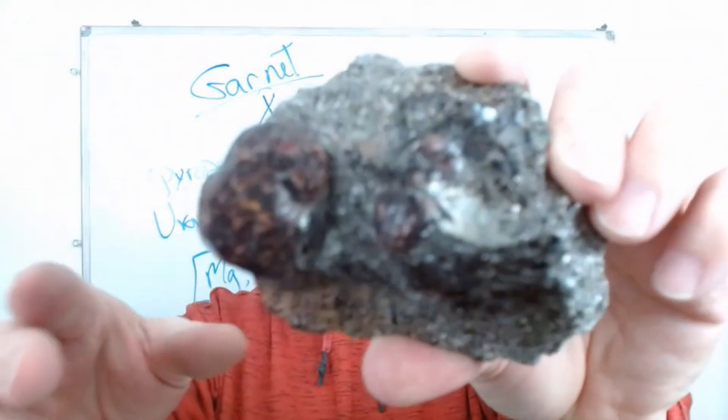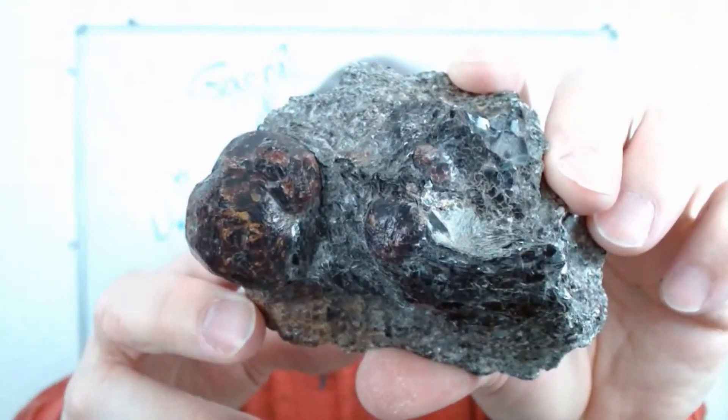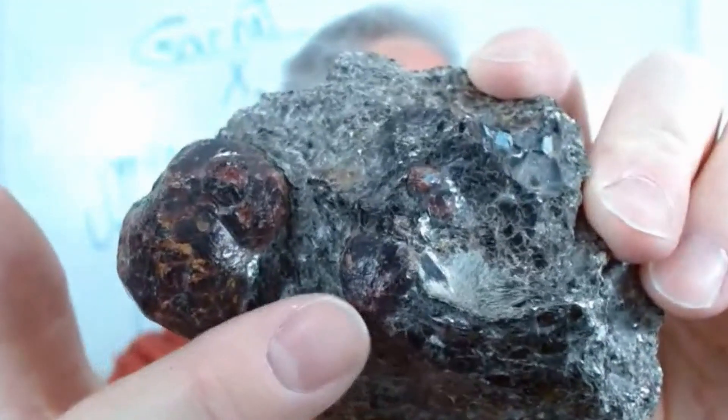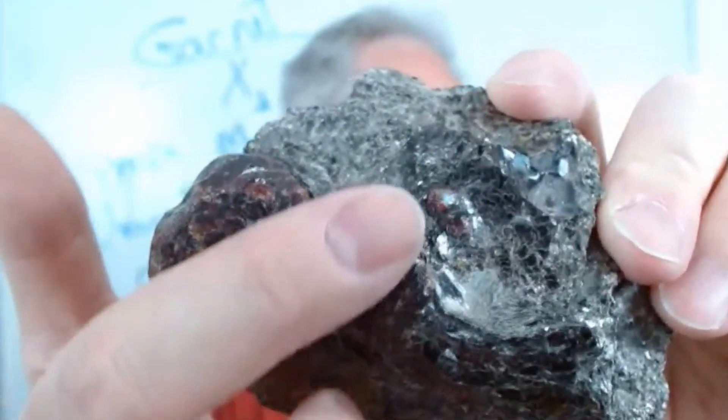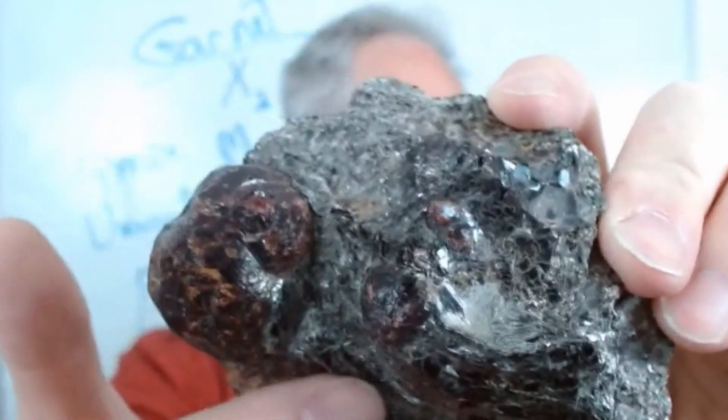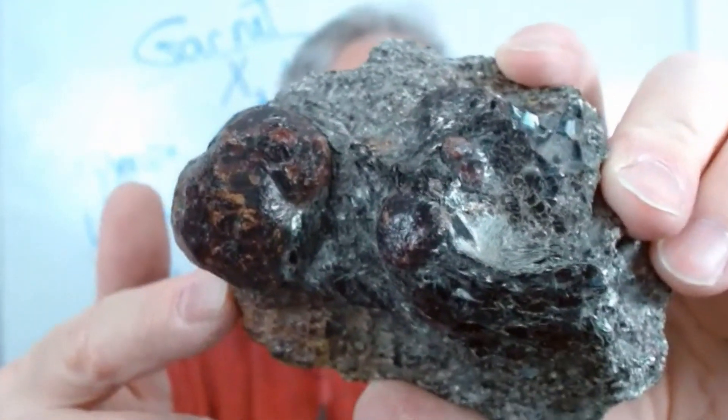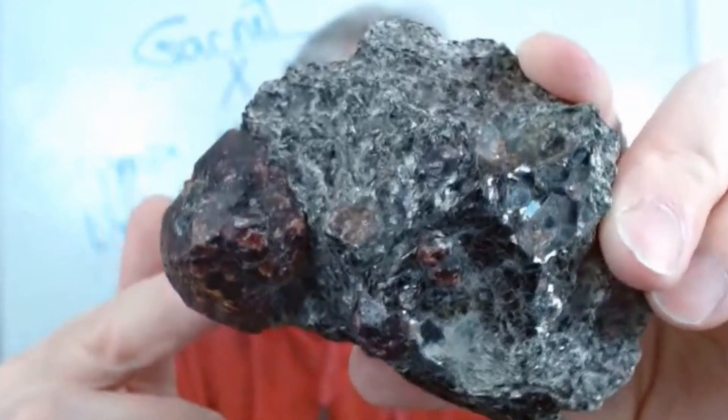Let's see if I can make it close so that you can have a good view. You can see this big garnet right here, another one right there, and another one here. All around you have a black mineral called biotite.